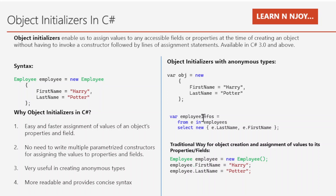We also use object initializers in LINQ query expressions. Here is a LINQ query where I instantiate an anonymous type using object initializers, selecting last name and first name for each imply from the imply list: var impliesInfo = from e in implies select new { e.LastName, e.FirstName }. If you want to rename the properties, you can easily do so — for example: lName = e.LastName, fName = e.FirstName — and the anonymous type will have those new attribute names.